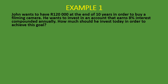Let's take a look at a few examples. The first example says that John wants to have R120,000 at the end of 10 years in order to buy a filming camera. He wants to invest in an account that earns 8% interest compounded annually. How much should he invest today in order to achieve this goal? The compounding is annual — once per year — so we don't need to apply the adjustment from the note.